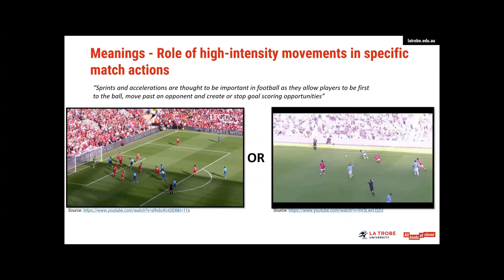So I now want to move on to the last part of my study, which is then providing meaning to these metrics. Again, I think the best way for someone to understand what a metric actually represents is by linking it to video. And I'm sure you're all really familiar with the sentence here. I've seen it in so many different introductions to match analysis research. It says that sprints and accelerations are thought to be important in football, as they allow players to be the first to the ball, move past an opponent and create or stop goal scoring opportunities. And I'm sure this is important, but I just want to play two videos for you.